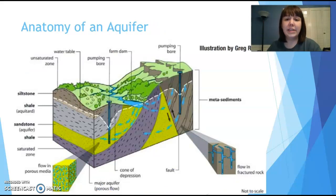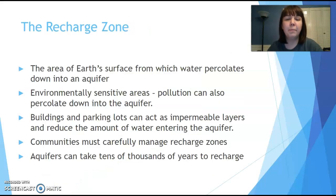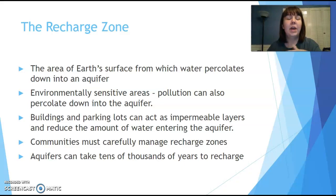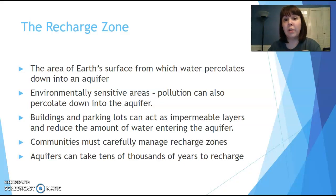Aquifers flow with the topography of the land — some areas are pushed up like a mountain range, others dip down like a valley. Water flows from one place to another and collects in certain areas, just like surface water. Where water flows into the aquifer — soaking down into the sand and soil — is called the recharge zone, and it's really important to protect these. They're environmentally sensitive because anything that soaks into the ground, including pollutants, eventually percolates down into the aquifer. If we pave over recharge zones with impermeable layers like concrete or asphalt, we reduce the amount of water replenishing our aquifers.